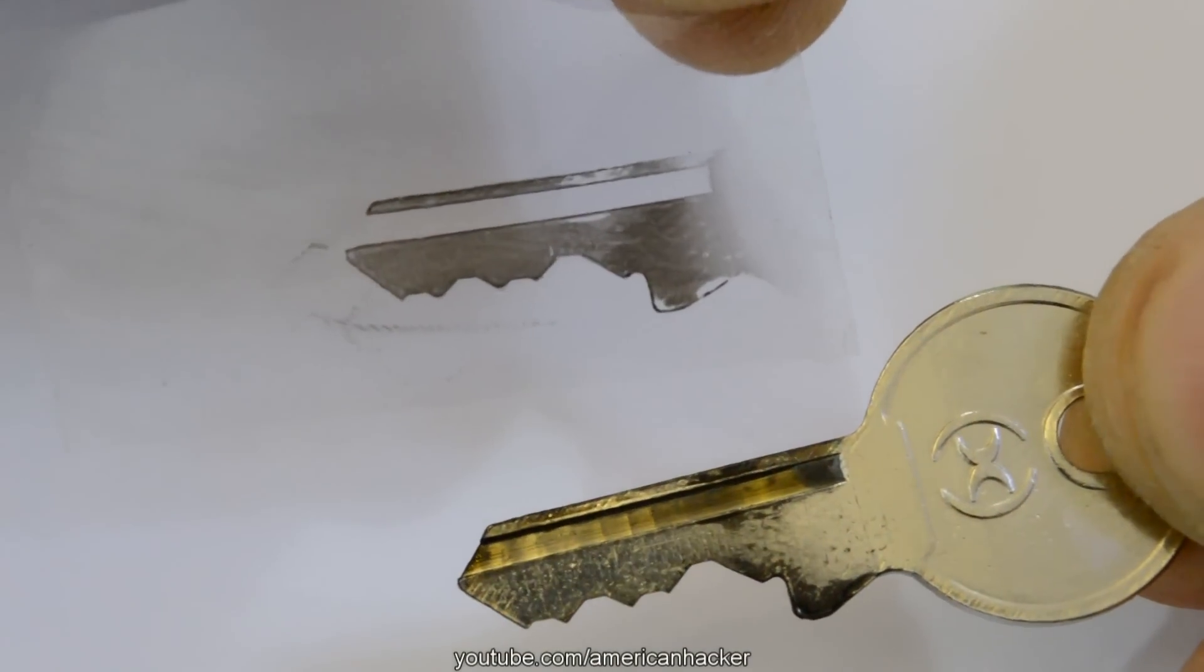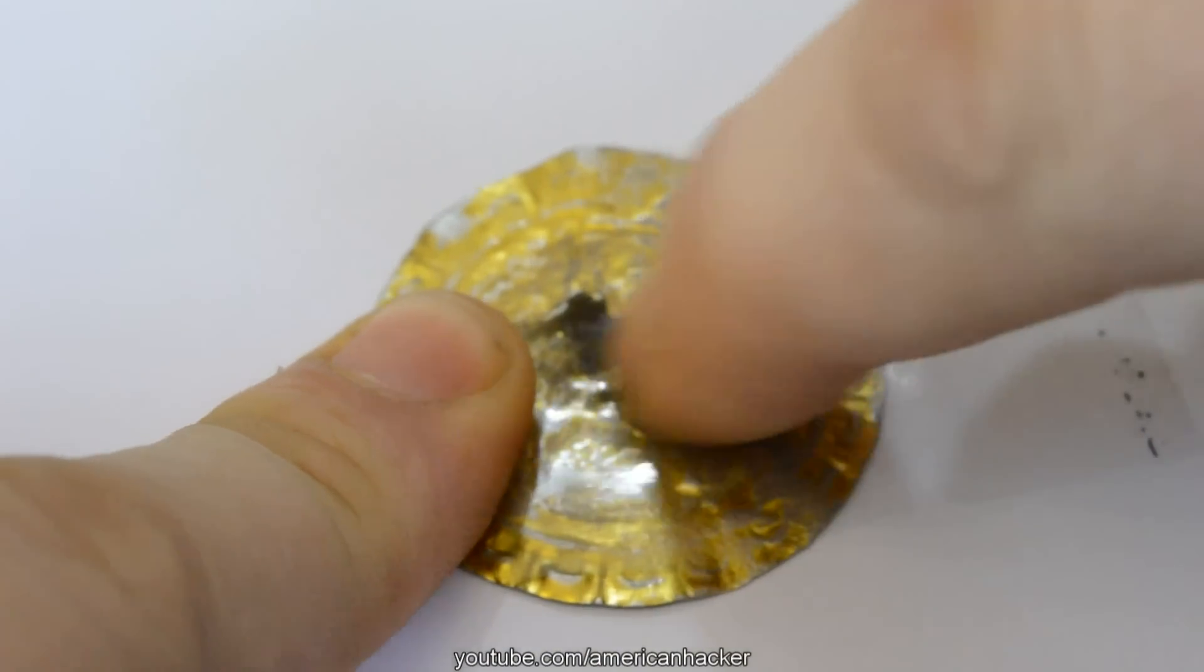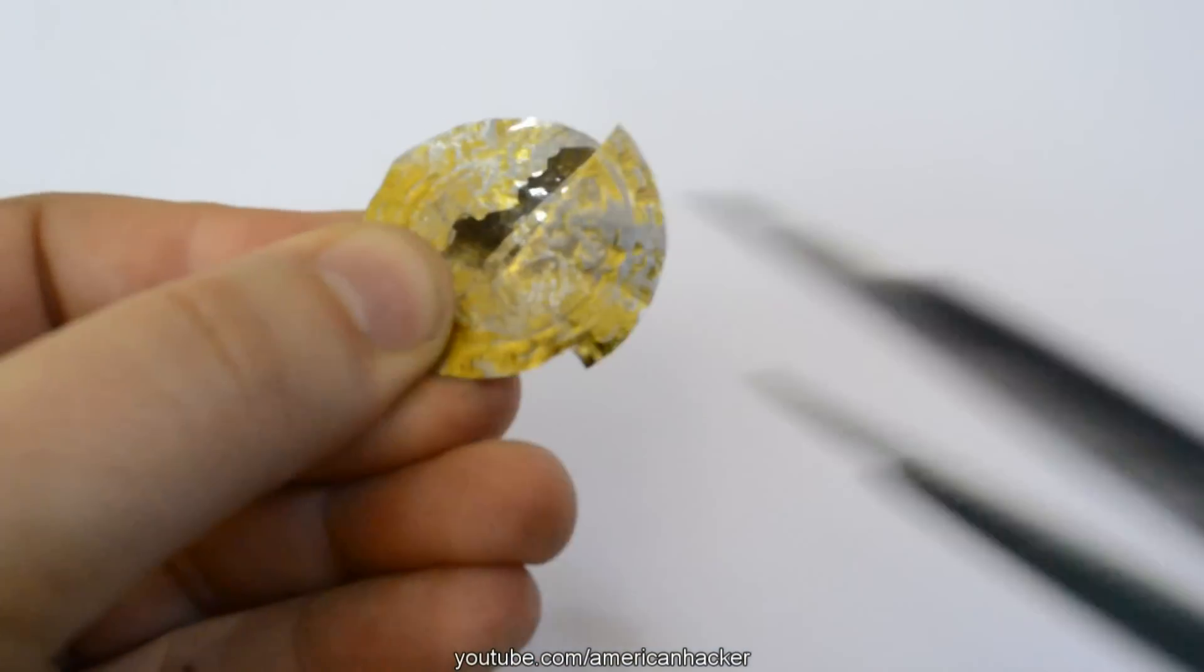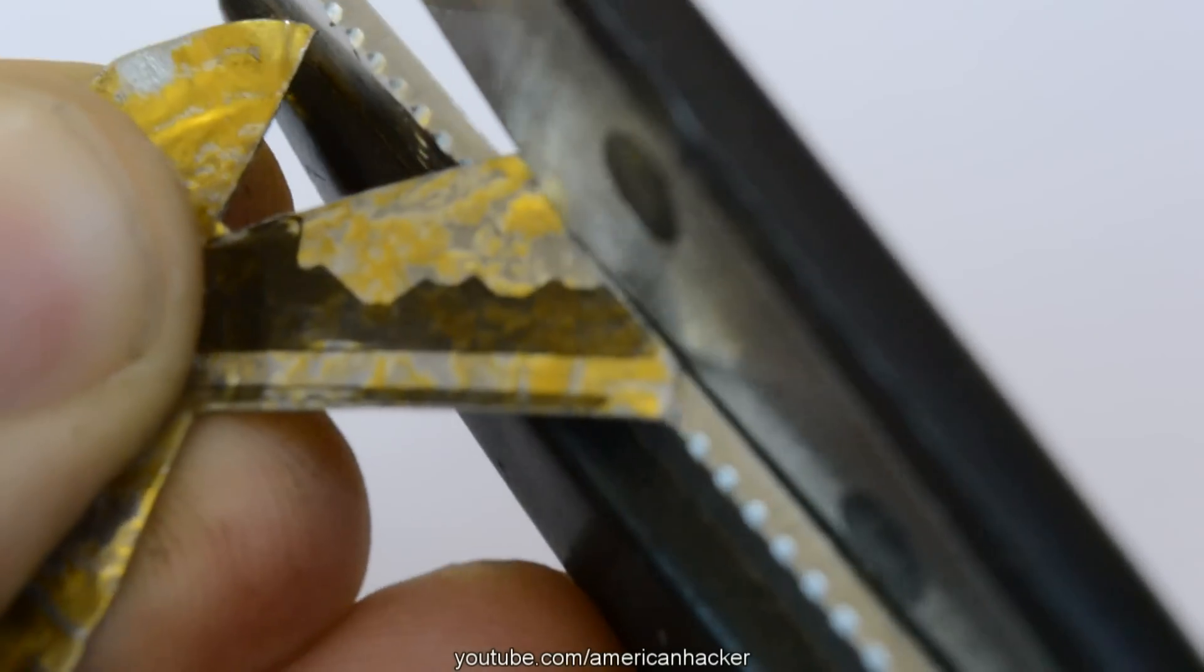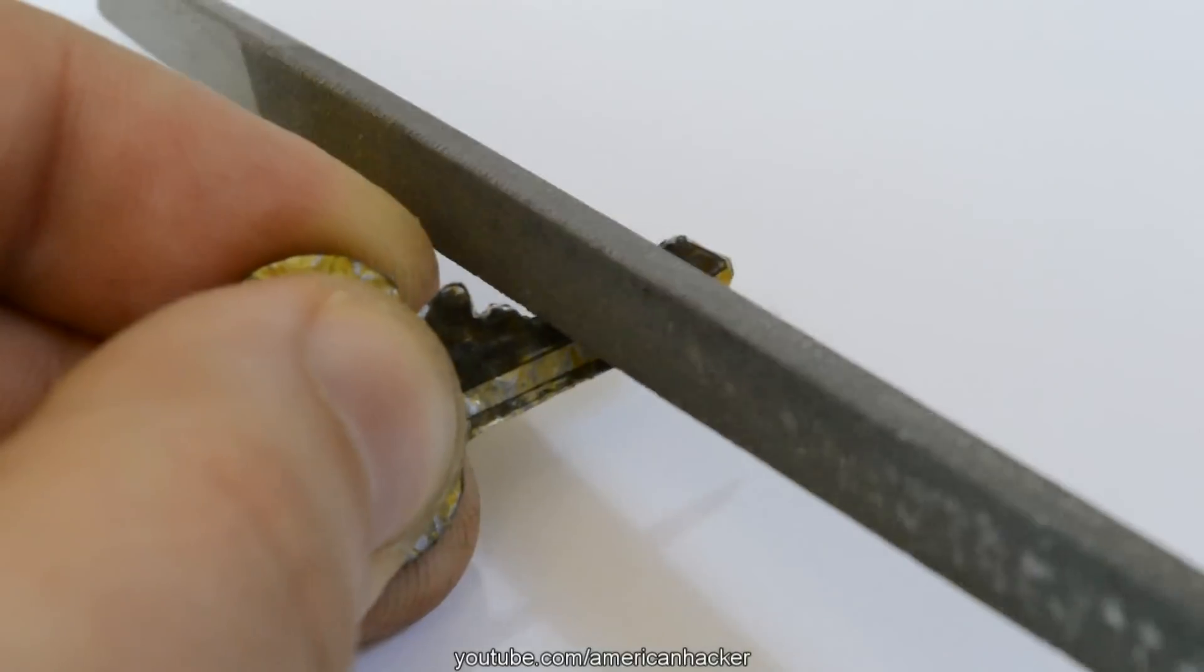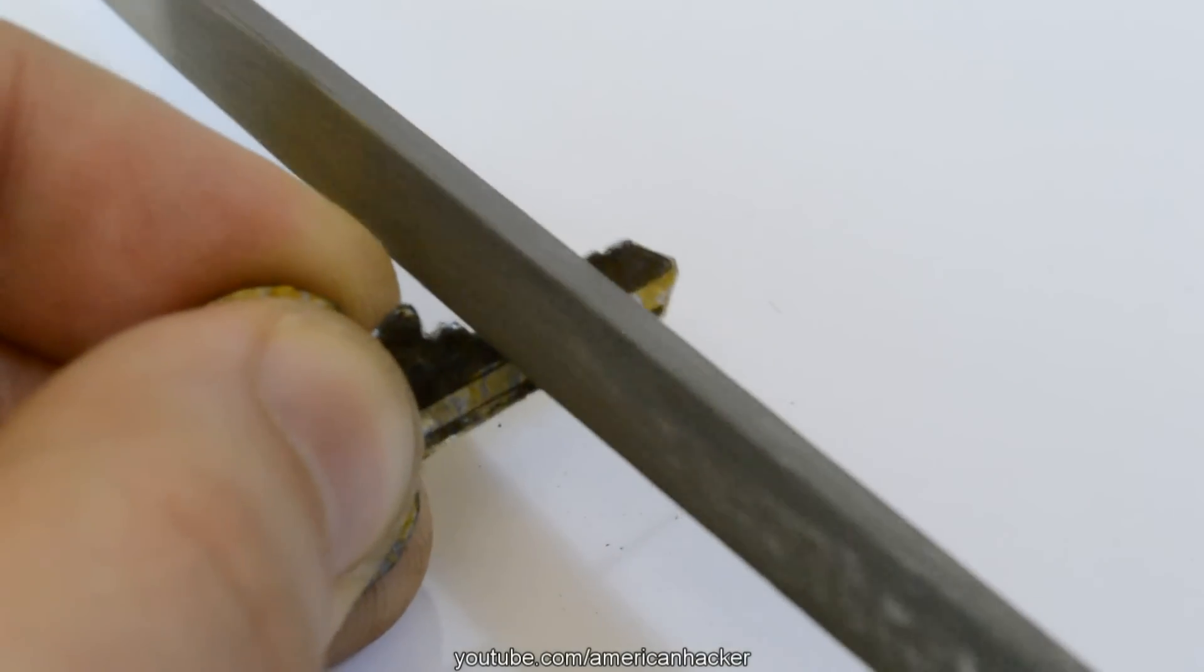Once again, stick it on the bottle cap and with scissors, gently cut out the key print. To make even better edges, use a metal file.